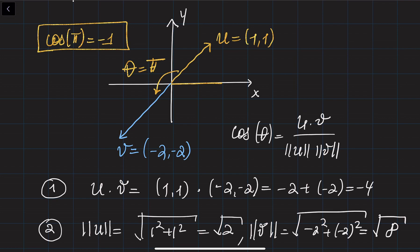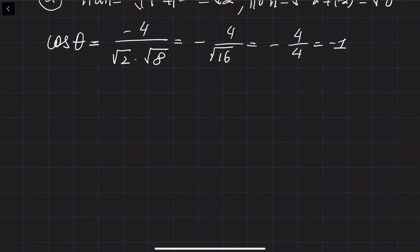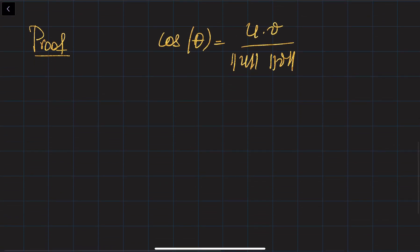Later on we will see that this formula helps us define orthogonal or perpendicular vectors as well. Now let's try to prove this formula. In order to prove it, I am going to use the so-called Law of Cosines.